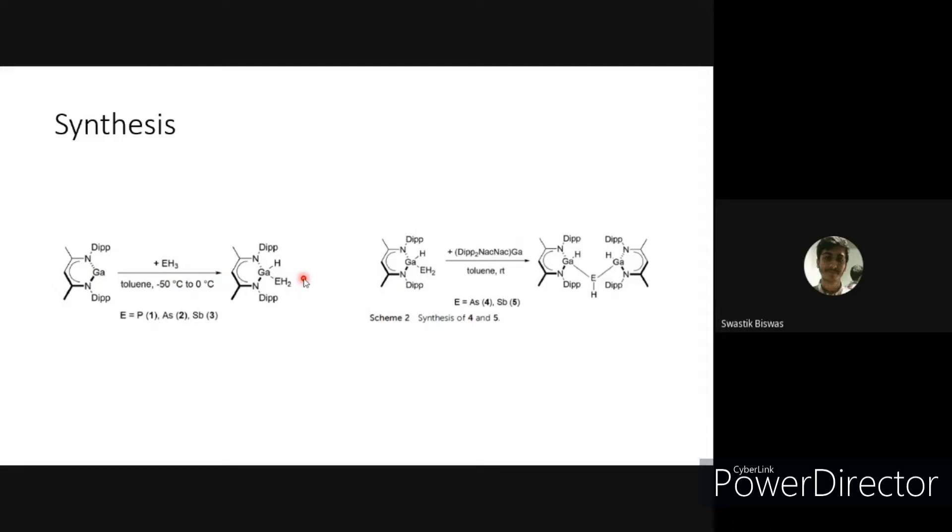The compounds 2 where E is equal to arsenic and 3 where E is equal to antimony were reacted with one equivalent of Dipp nacnac gallium at ambient temperature to form bridged compound of lower solubility than their precursor.